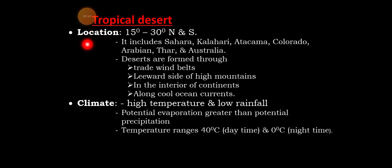The location of tropical deserts — tropical deserts are found at the same latitudes as the tropics of Cancer and Capricorn.